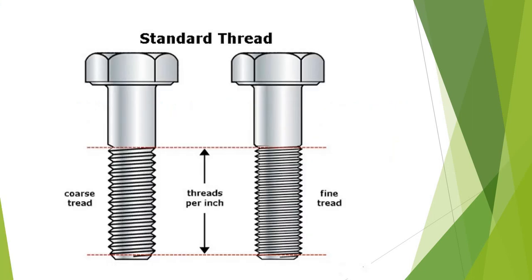Before discussing designation, let's look at what is meant by a coarse thread and a fine thread. In this figure you can see two threaded fasteners — bolt number one and bolt number two. Both have the same major diameter. Looking at the threaded portion, you can see that the threads per inch is less in the coarse thread bolt compared to the fine thread bolt.